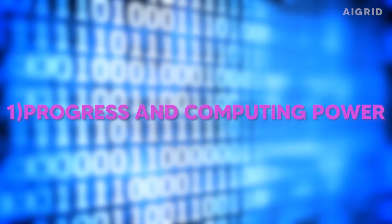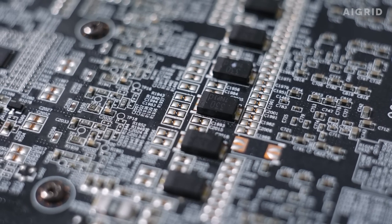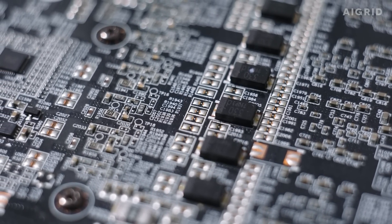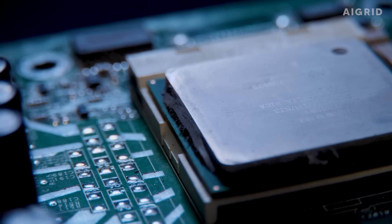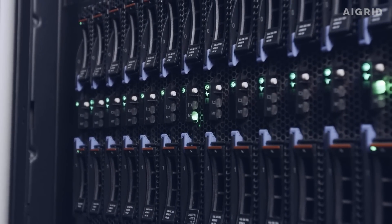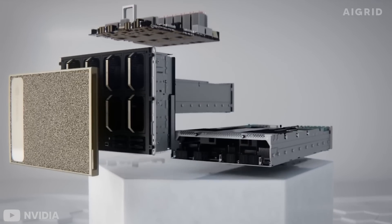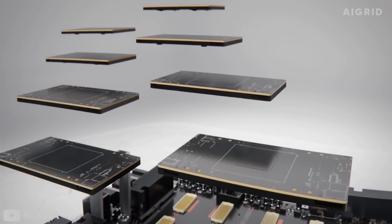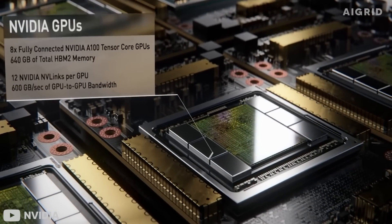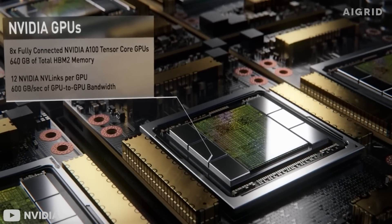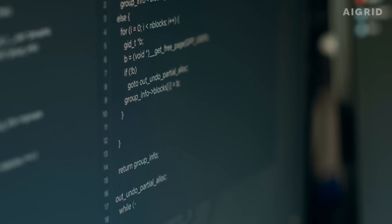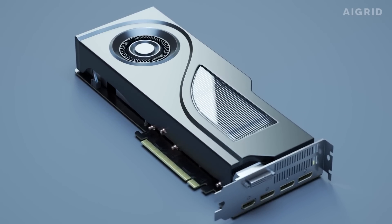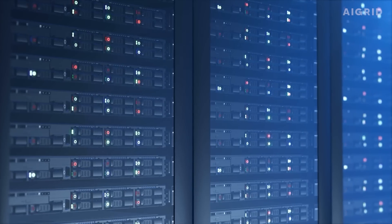First is the progress in computing power. Every two years or so, the number of transistors in densely integrated circuits doubles. This improves the hardware's computational capability. Graphic processing units, GPUs, were enhanced by doubling. Due to this, parallel computing becomes more conceivable. Machines are able to identify patterns in a wide range of information thanks to this enormous computational capacity, with enhanced GPU, parallel processing, and cloud computing.